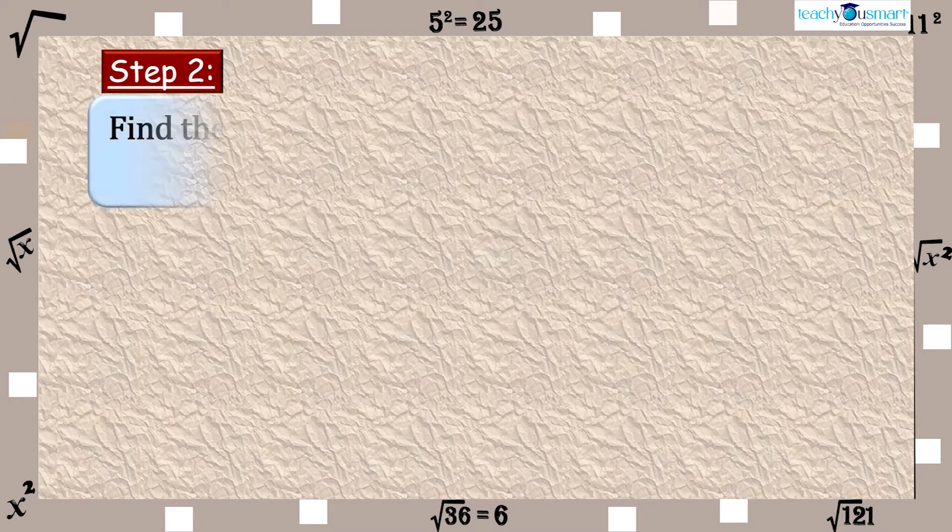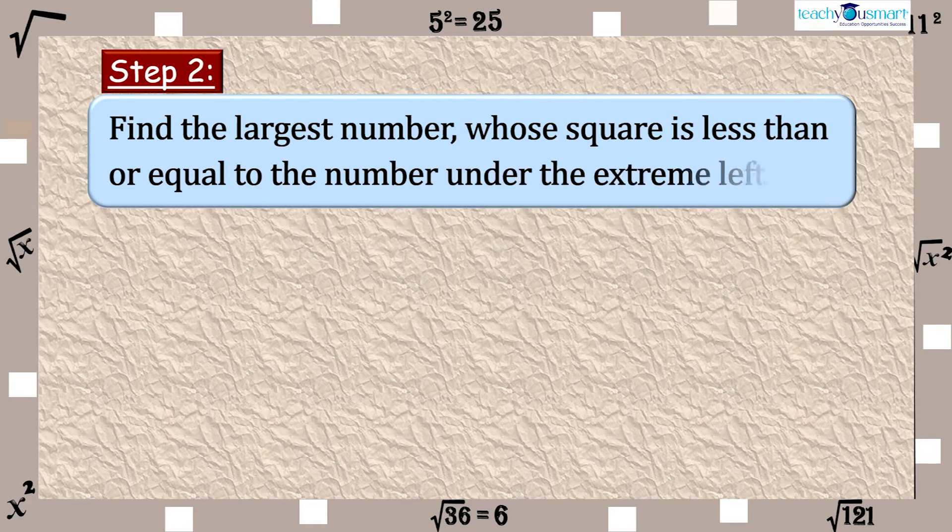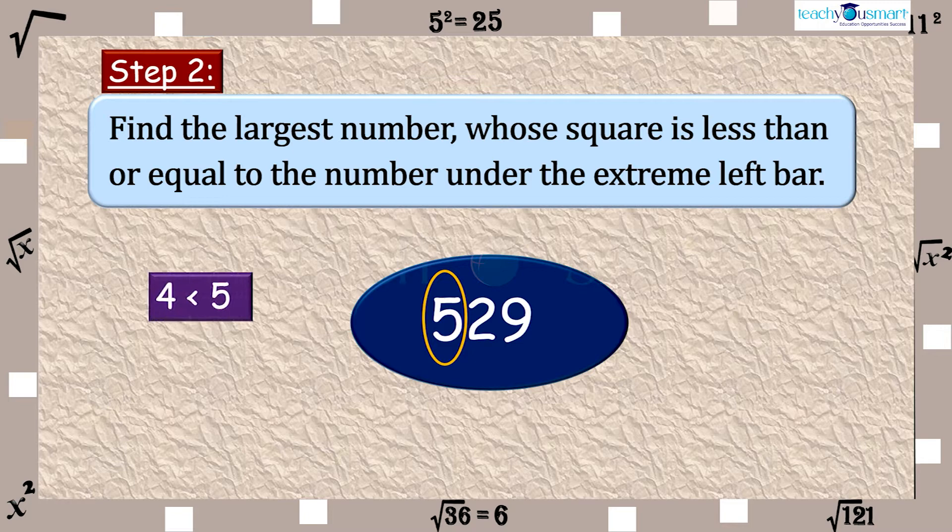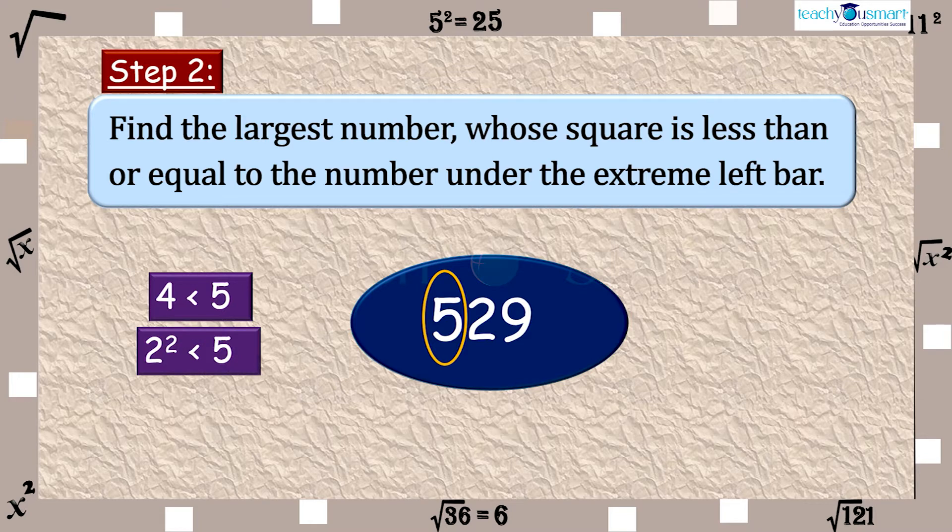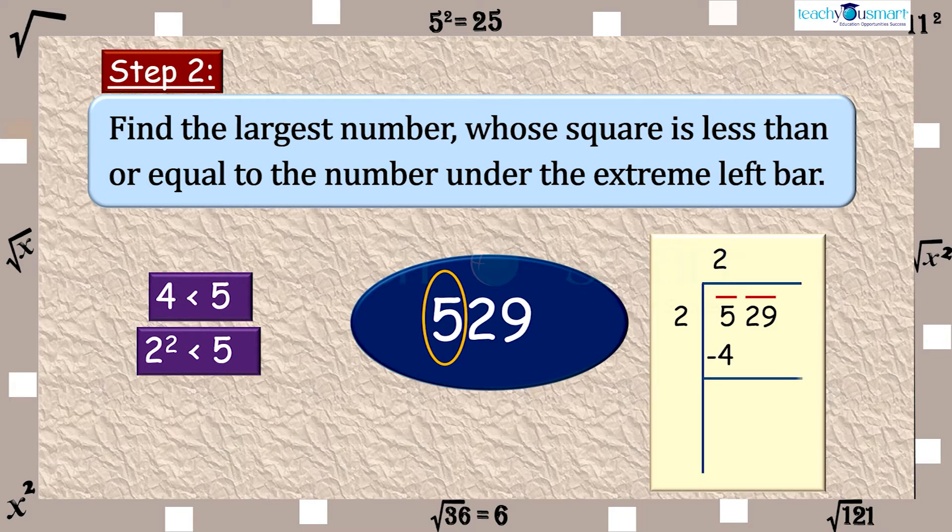Step 2: Find the largest number whose square is less than or equal to the number under the extreme left bar. Here, 4 is the largest square number less than 5. That is, 2 is the largest number whose square is less than 5. Take the number 2 as divisor and quotient, divide, and get the remainder. Here the remainder is 1.